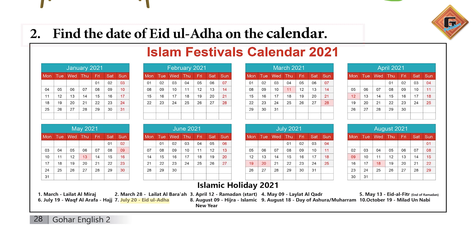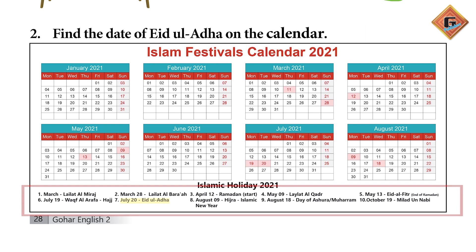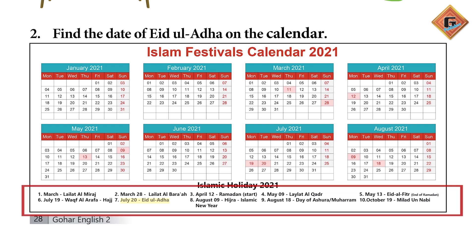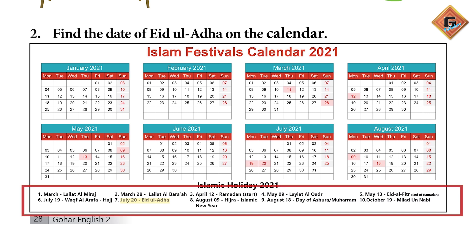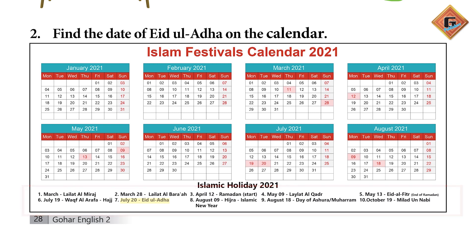The instructions are shown below. If you can see, March 1 is Lailatul Miraj. Then the 28th is Lailatul Bara. After that, Ramadan starts. Then May 9th.